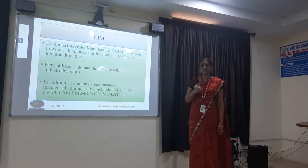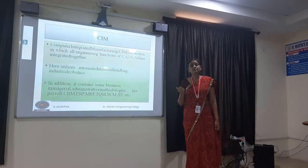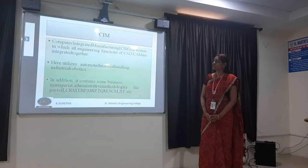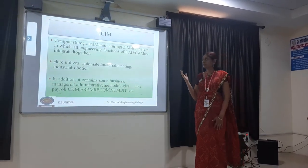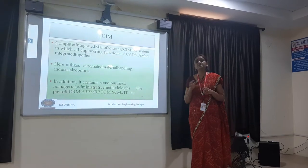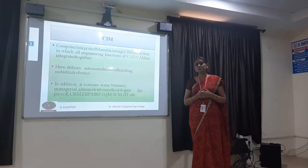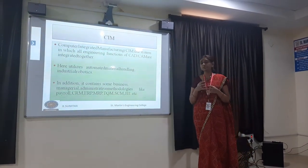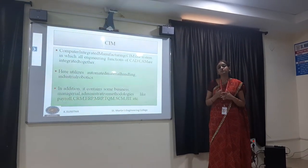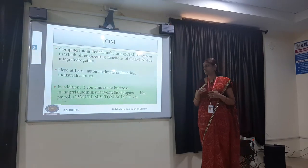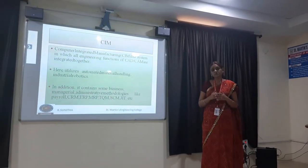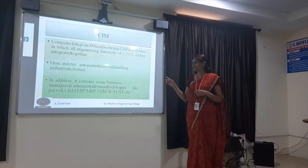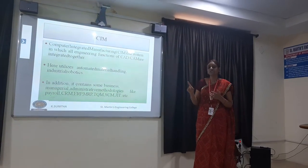Now let us understand in detail what is CIM. CIM means Computer Integrated Manufacturing. It is a system in which all the functions of CAD and CAM are combined or integrated together. Here we use computers for automated material handling and also use industrial robots in the manufacturing plant. In addition, computers are also used for business applications like managerial or administrative methodologies like CRM, ERP, MRP, TQM, etc.